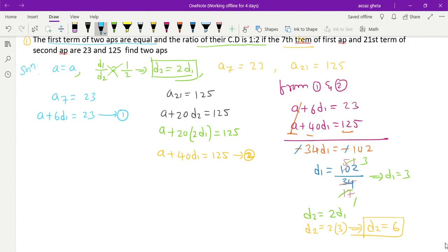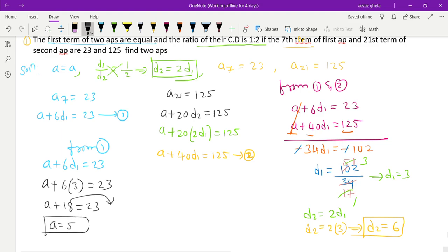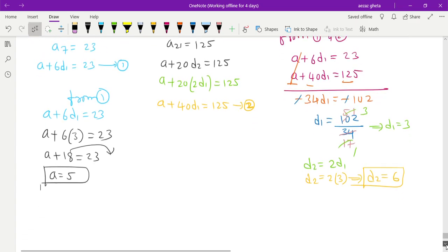the value of a. We have a + 6d1 = 23 from equation 1, and d1 = 3. So a + 18 = 23, which gives a = 5. Now you can easily find the two APs.